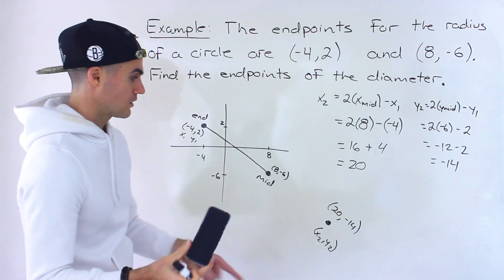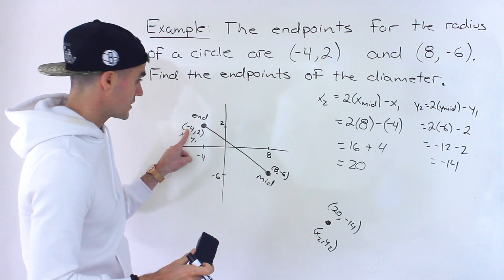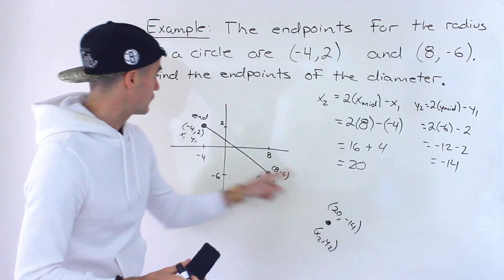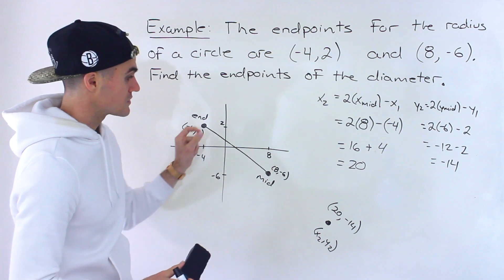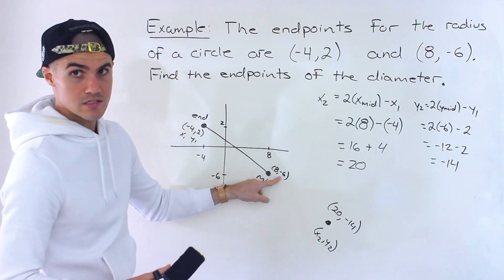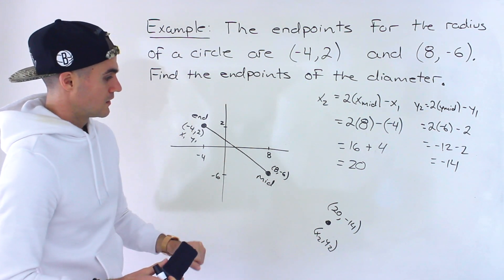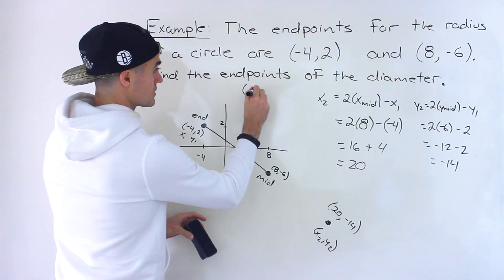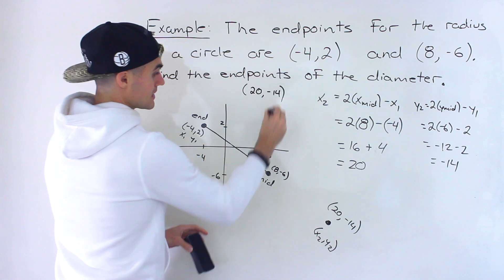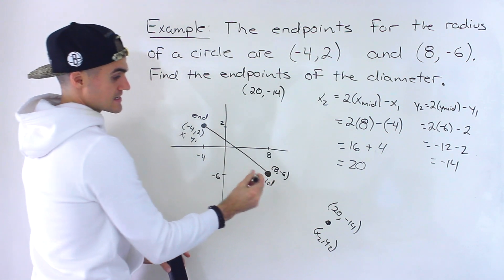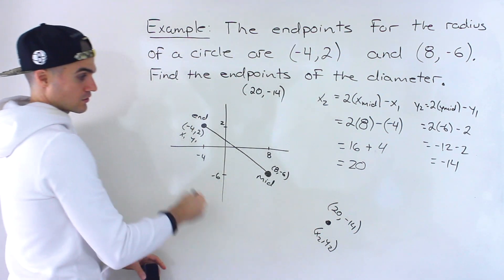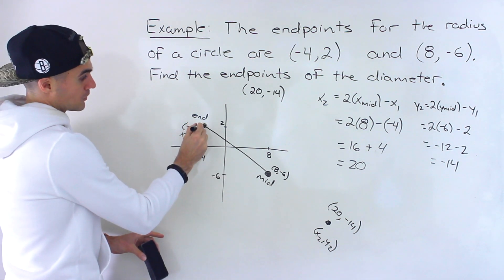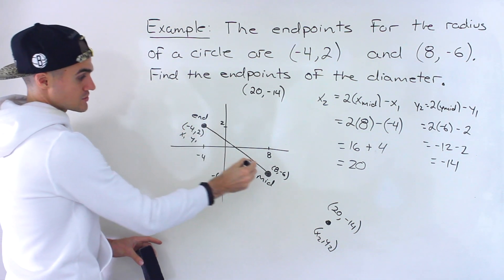You can check your answer: 20 plus negative 4 is 16, divided by 2 gives 8. And negative 14 plus 2 is negative 12, divided by 2 gives negative 6. That confirms the midpoint is 8 and negative 6. So that's the first solution, treating 8 and negative 6 as the center of the circle.